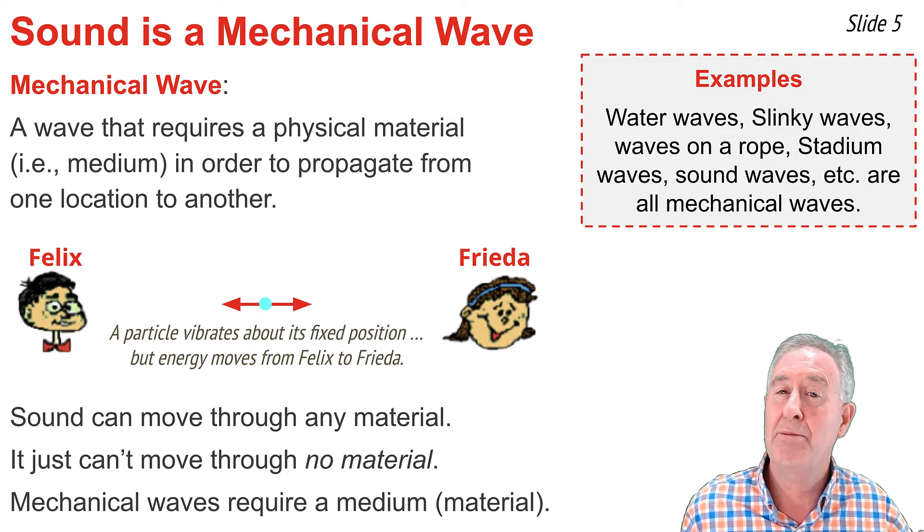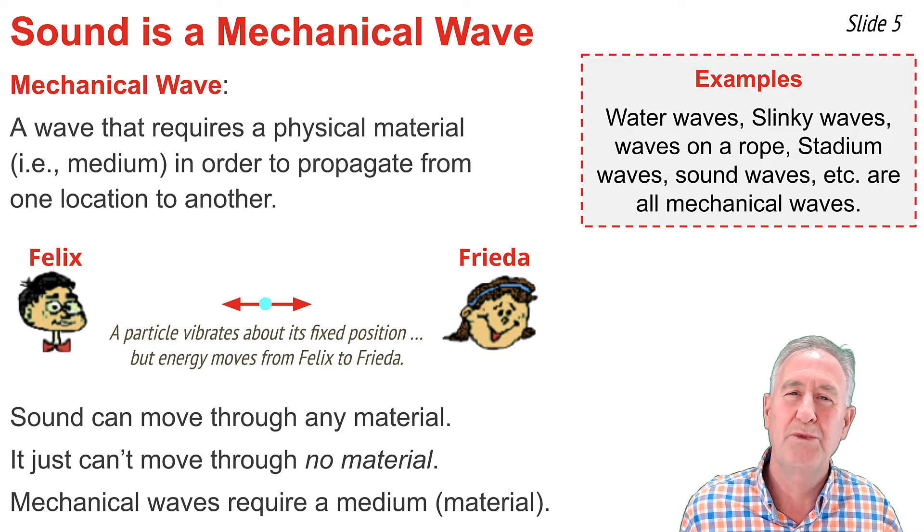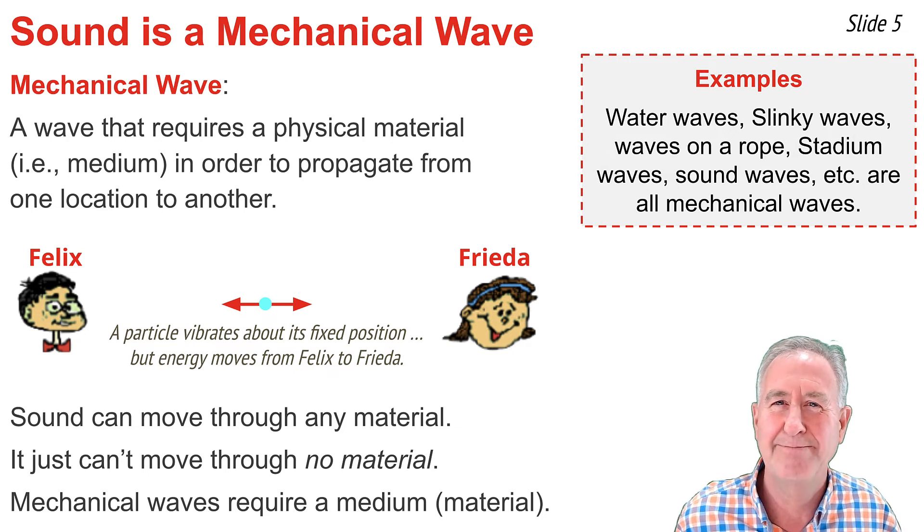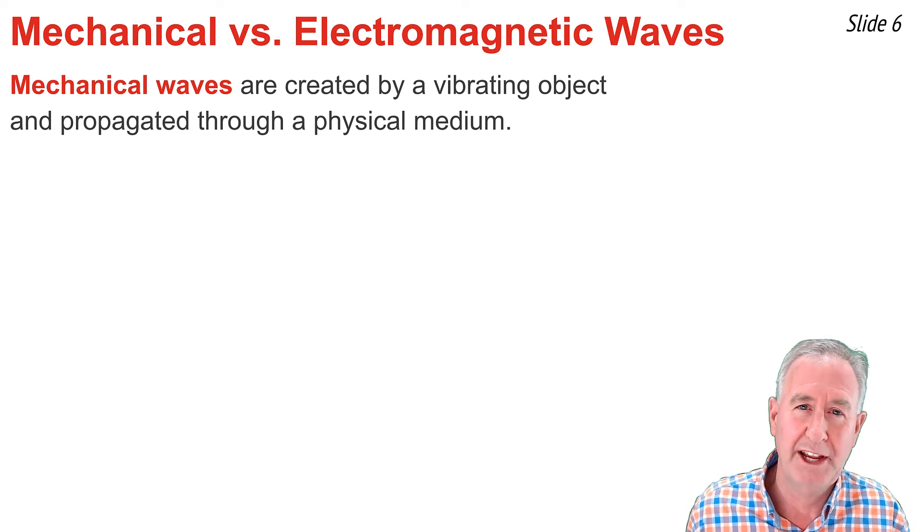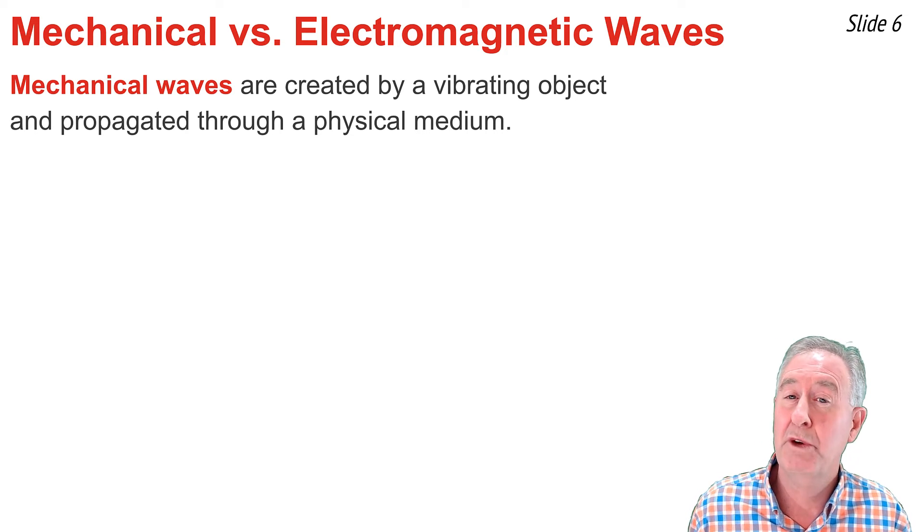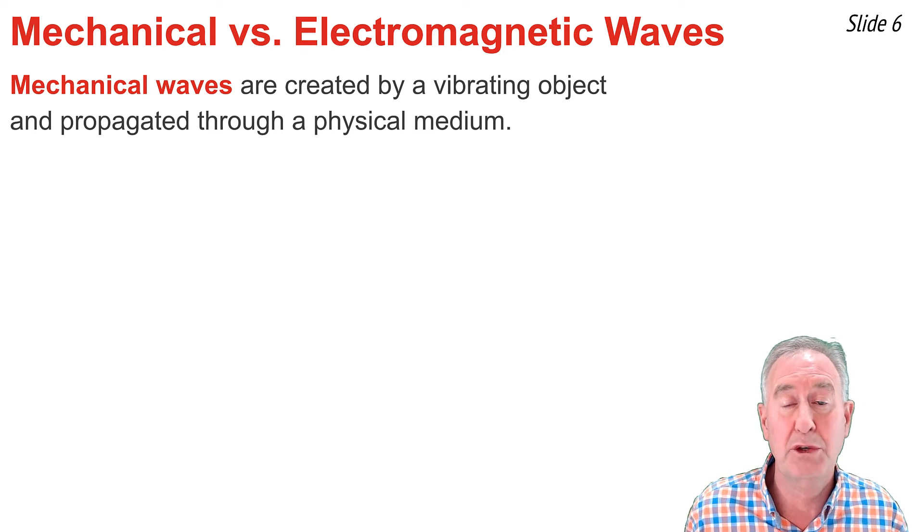Like any mechanical wave, a sound wave requires a medium in order to move from one location to another. Mechanical waves are different than electromagnetic waves. A mechanical wave is created by a vibrating object and is propagated through a physical material.